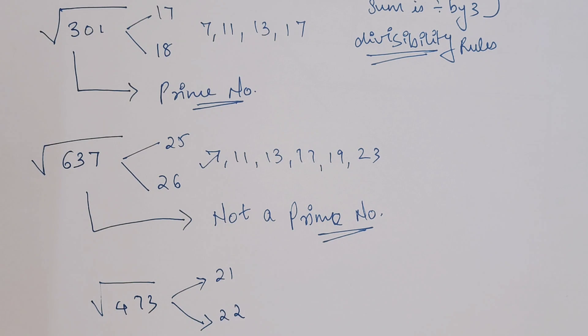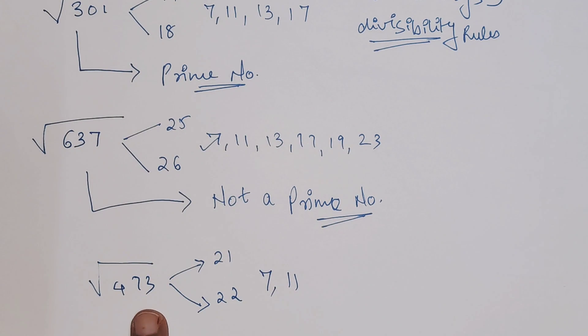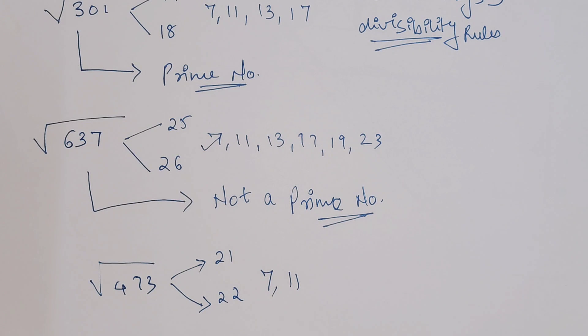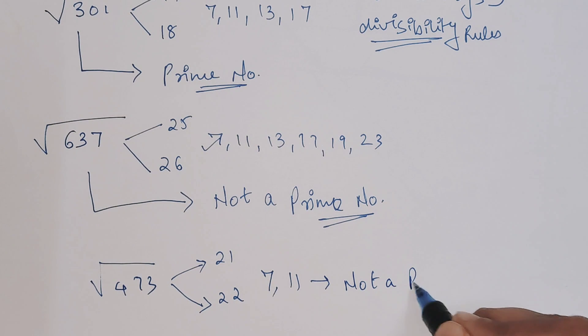Again we'll check: the addition is not divisible by 3, it's not even, not ending in 5 or 0. Let's check for 7 - no, it's not working. With 11, let's check - yes, it is completely divisible by 11. So now we can say this number is again not a prime number.